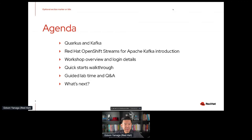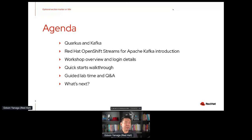What is today's agenda? We're going to learn about Quarkus and Kafka. I'll show you a quick demo about how exciting Quarkus and Kafka can be together. Then we'll learn about Red Hat OpenShift Streams for Apache Kafka, go through the workshop overview and login details, perform a walkthrough for the quick starts, then do Q&A, and finally next steps regarding OpenShift Streams, Apache Kafka, and Quarkus.